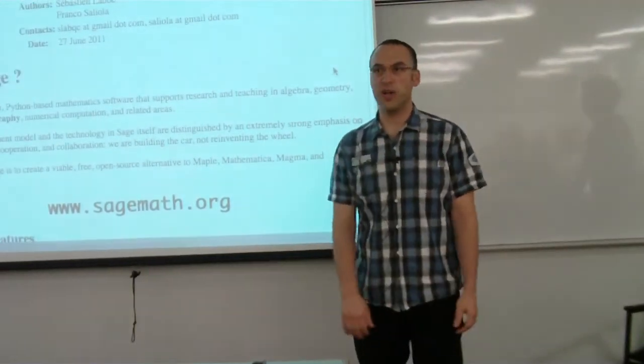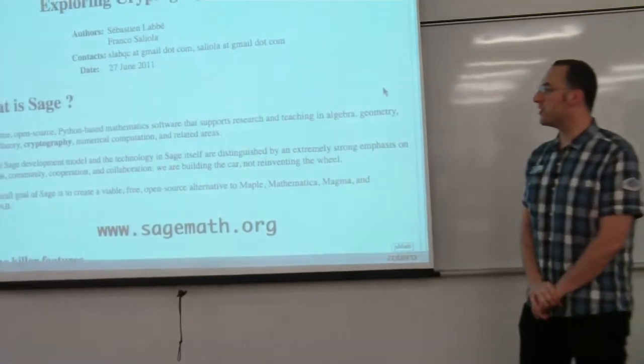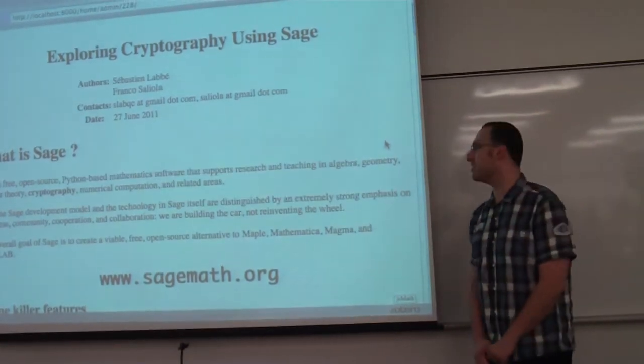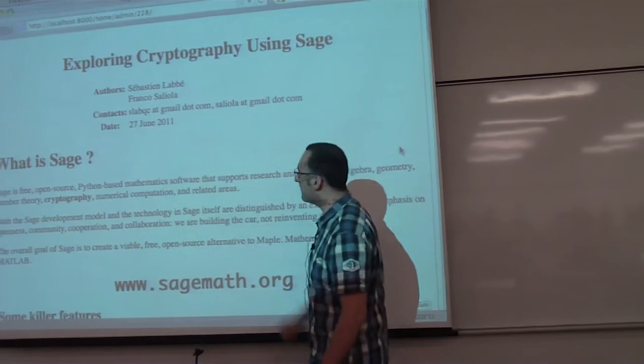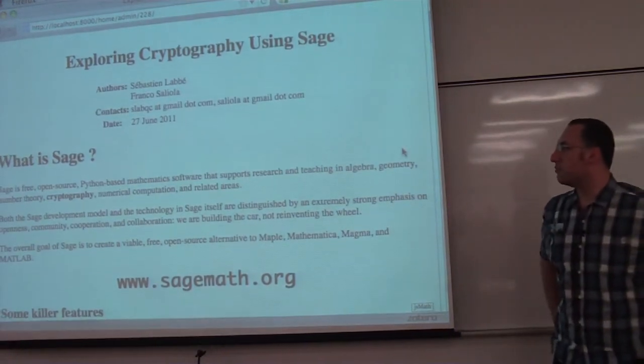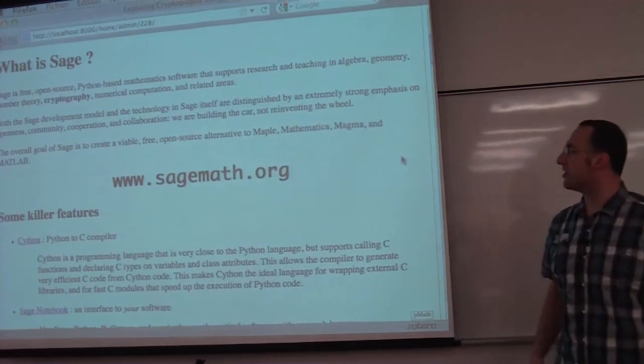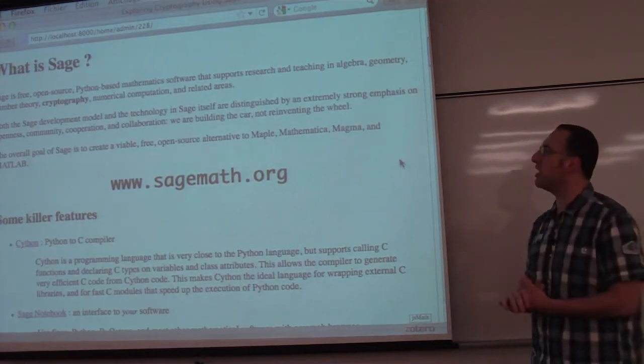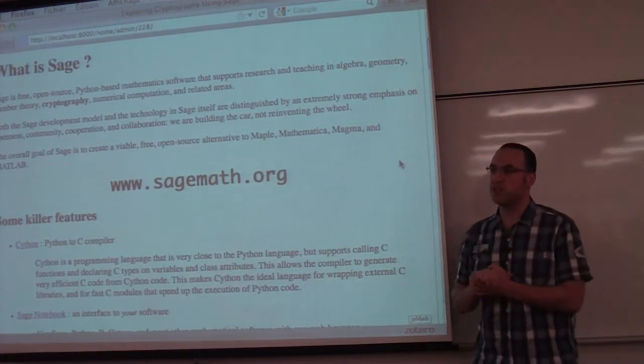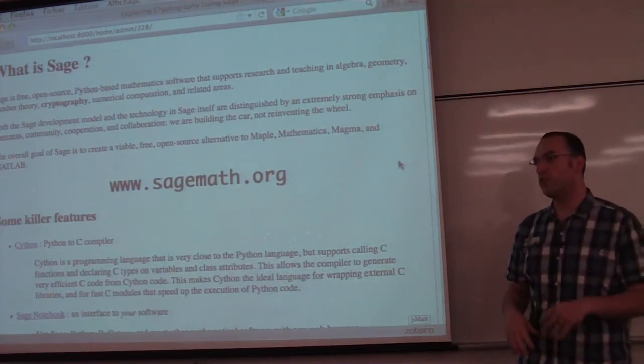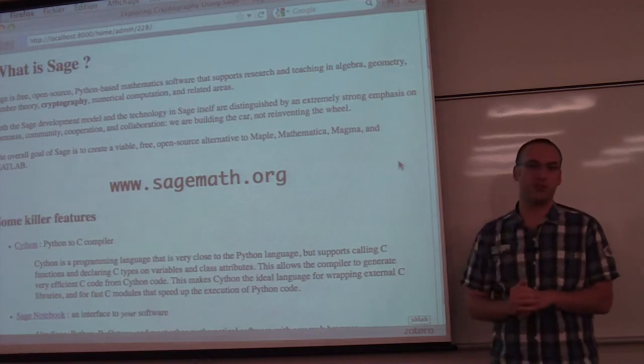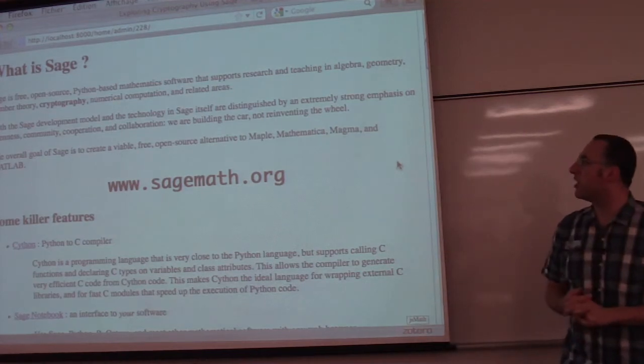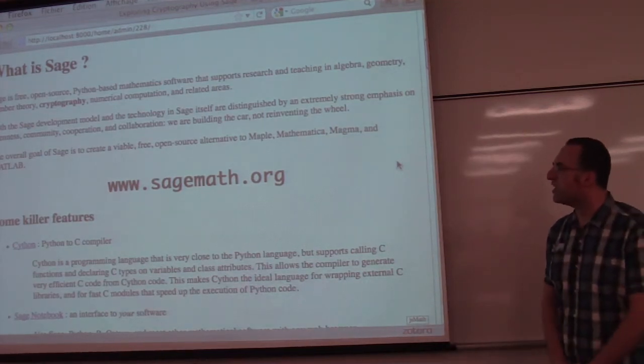Some of you may have been here for our one hour presentation. SAGE is a free open source Python based mathematics software system and the goal is to support research and teaching in various areas of mathematics, one of them being cryptography. Both the SAGE development model and the technology in SAGE itself are distinguished by its openness and community cooperation and collaboration. And the idea is that we are building the car and not reinventing the wheel. So instead of reinventing pieces of software, we're taking existing open source software systems out there and merging them together. And the overall goal of SAGE is to create a free, viable open source alternative to Maple, Mathematica, Magma, and Matlab.